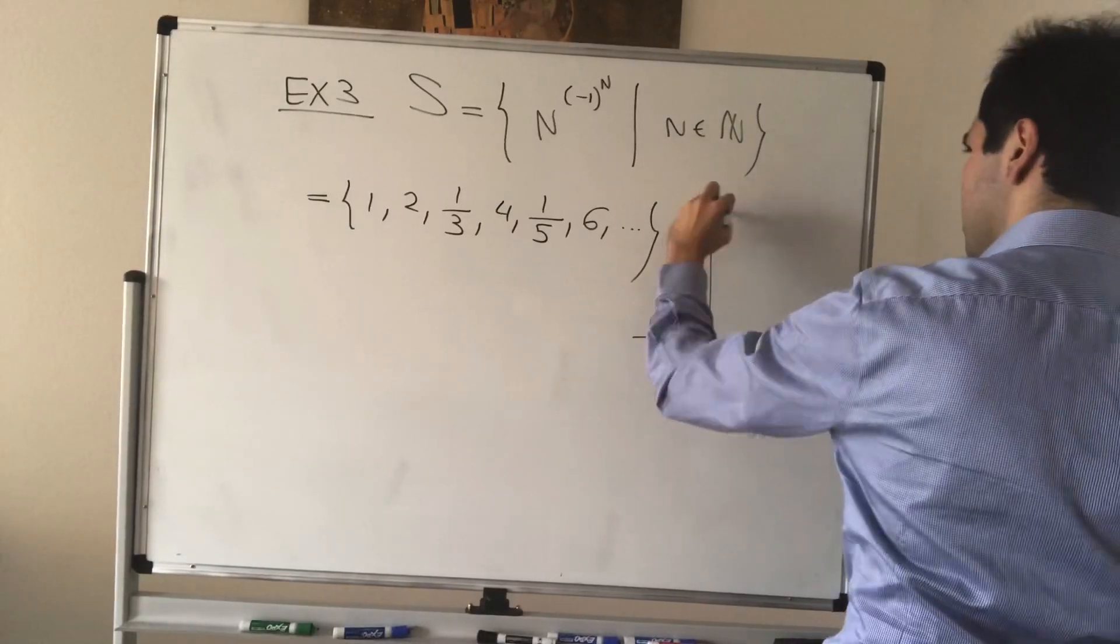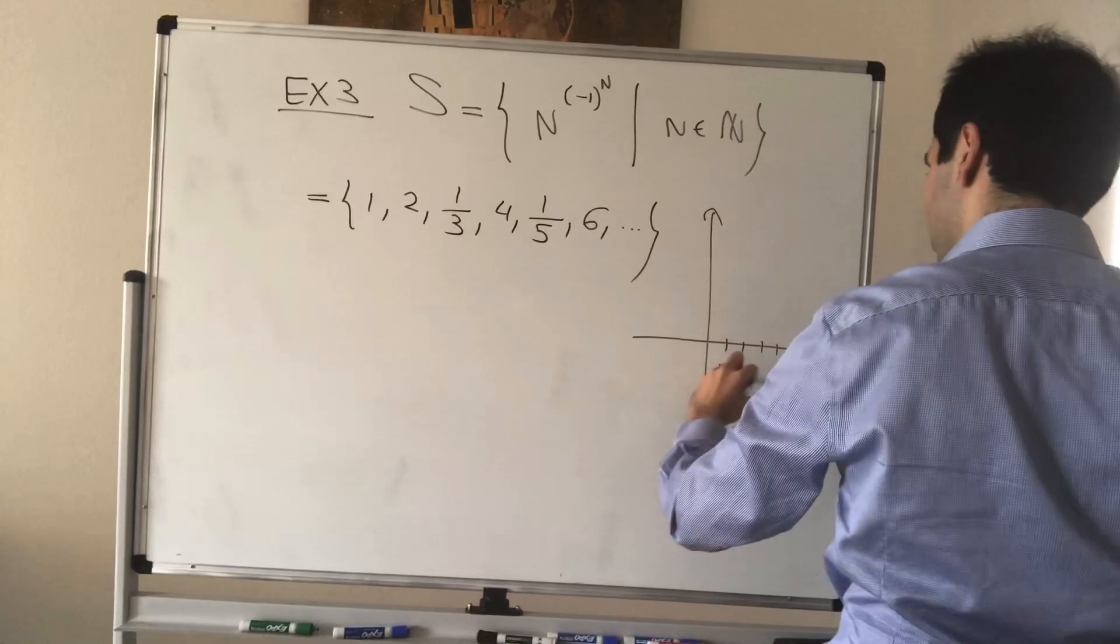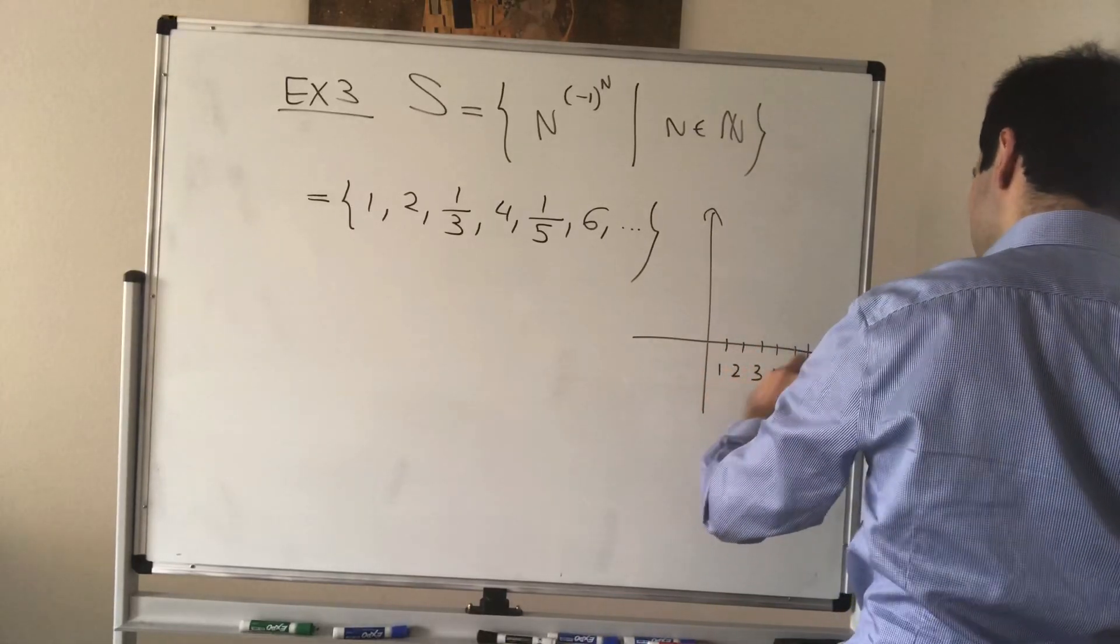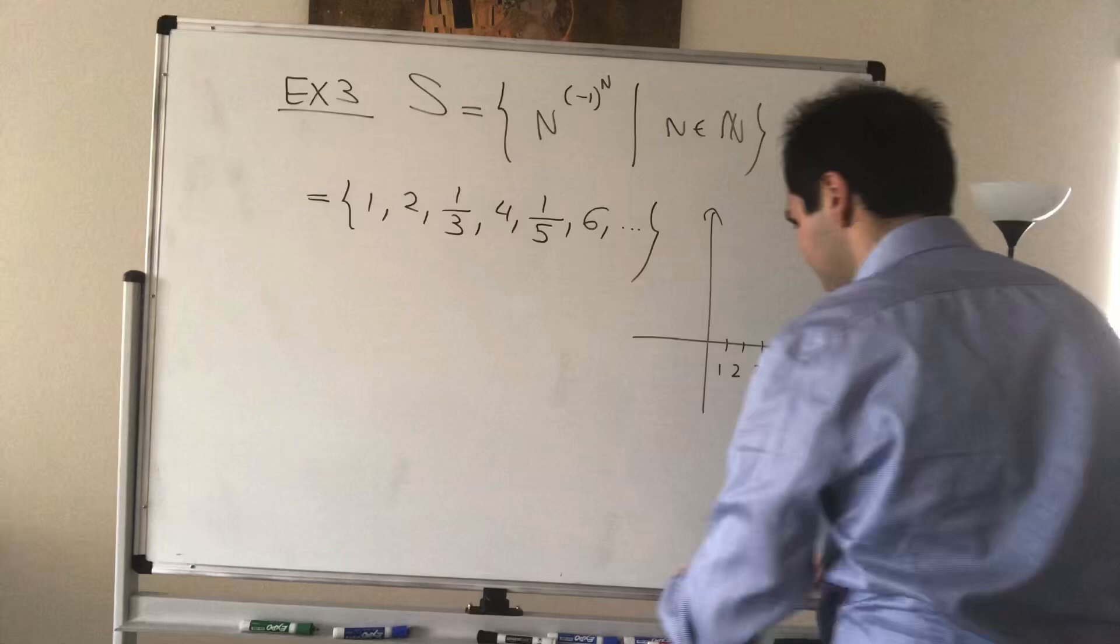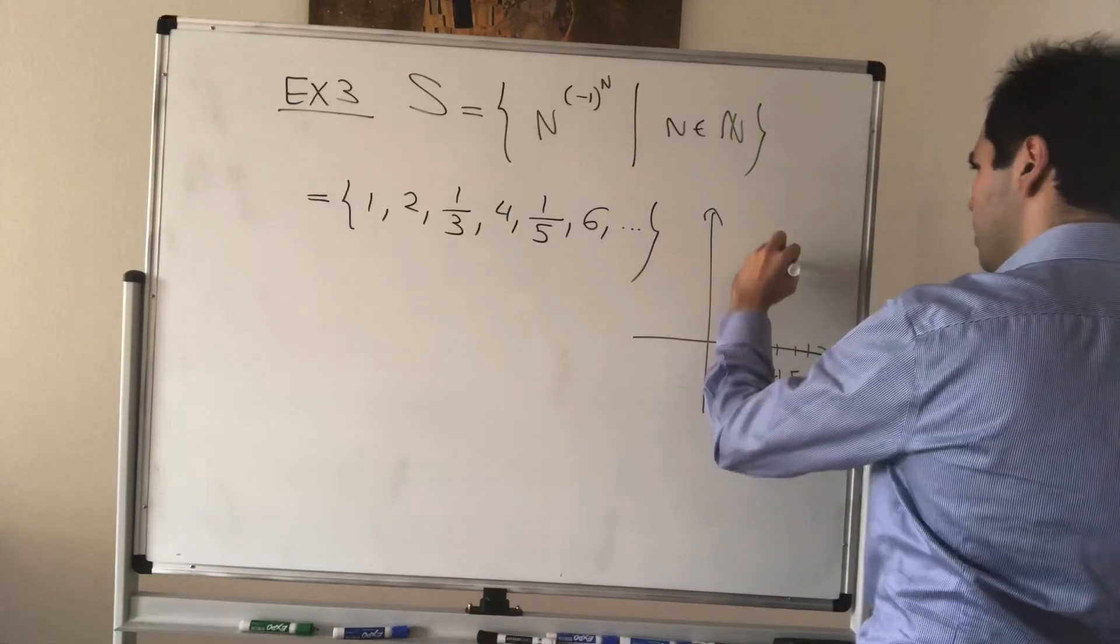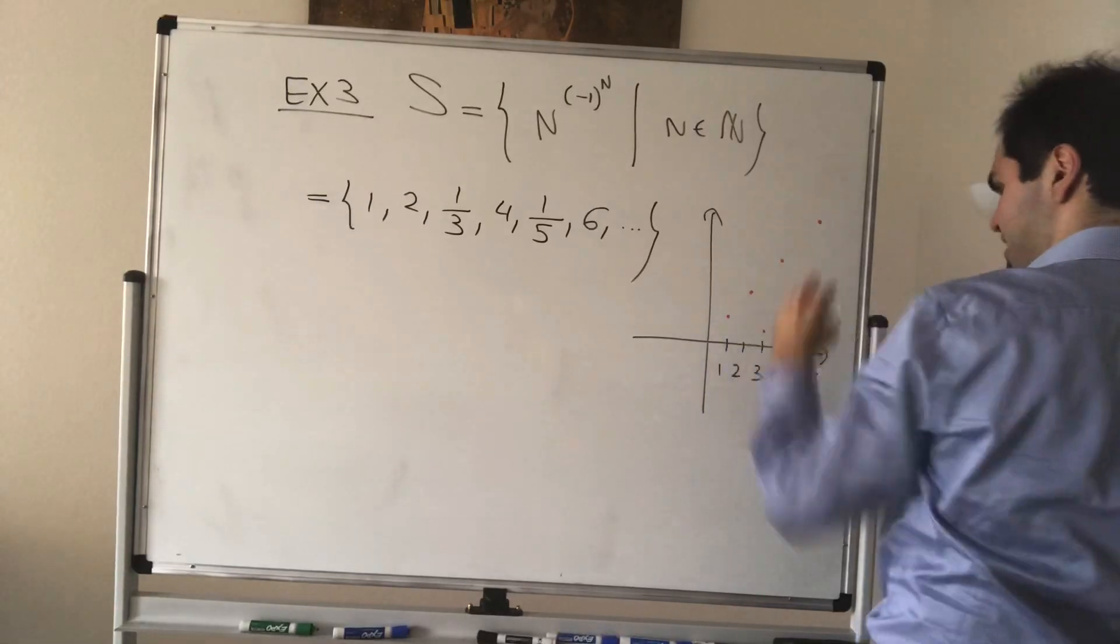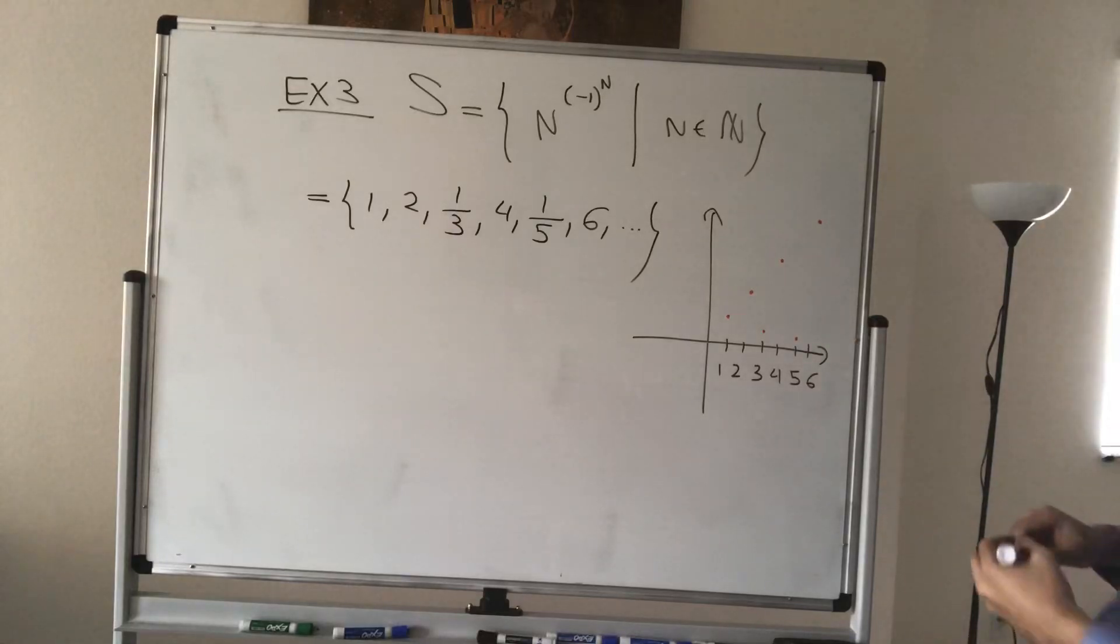And what it looks like, again, if this is 1, 2, 3, 4, 5, 6, and 1, 2, 3, 4, 5, 6, what this looks like is, this is 1, 2, and then 1/3, 4, 1/5, 6, etc.